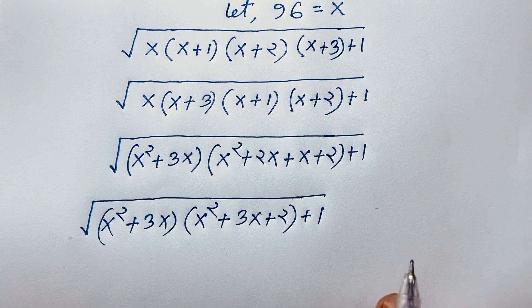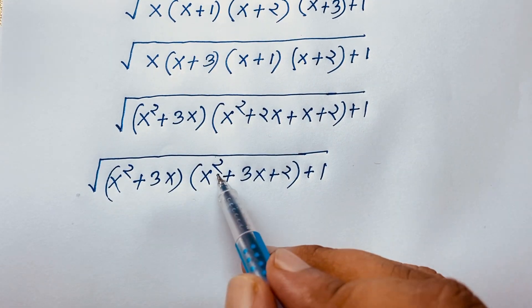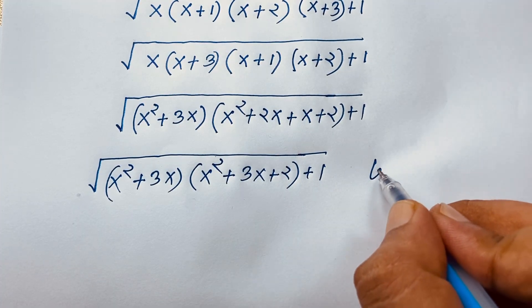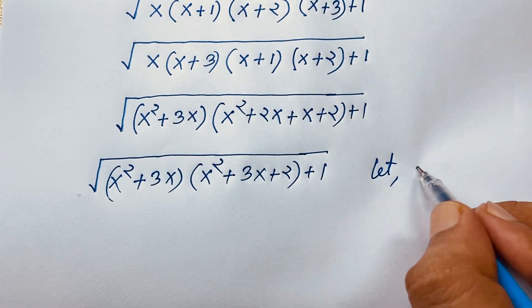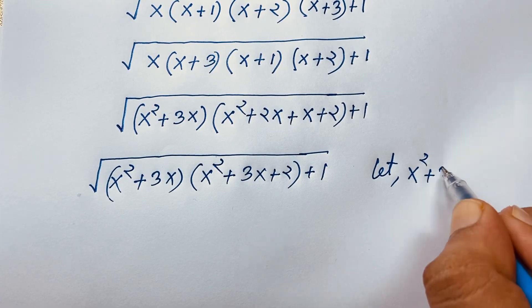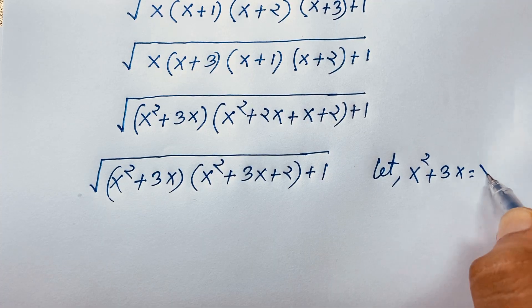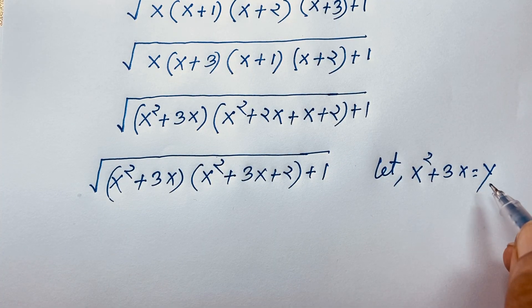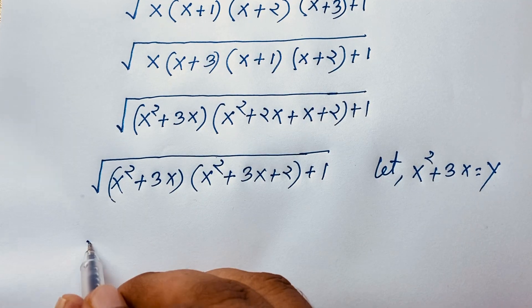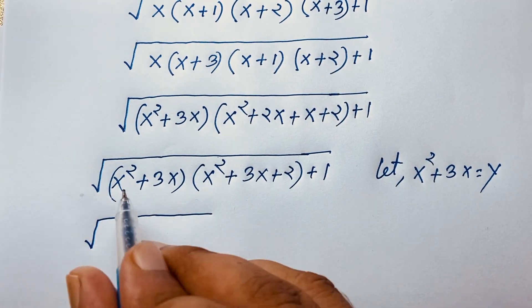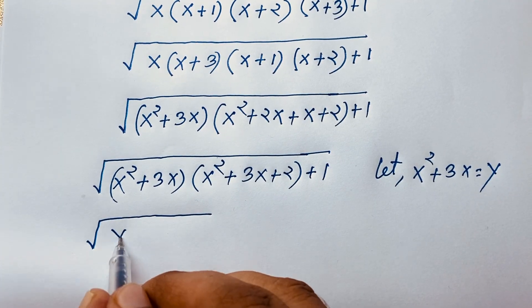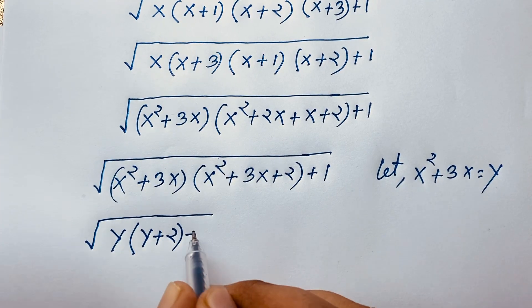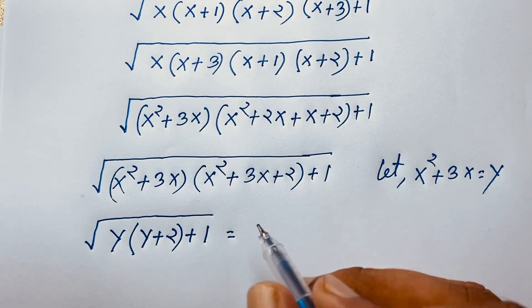Now let y equal x squared plus 3x. Then the expression under the square root becomes y times (y+2) plus 1.